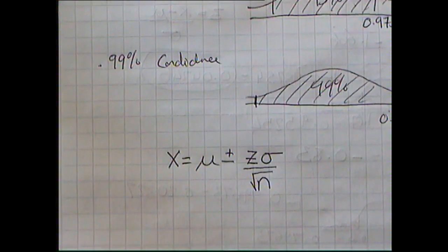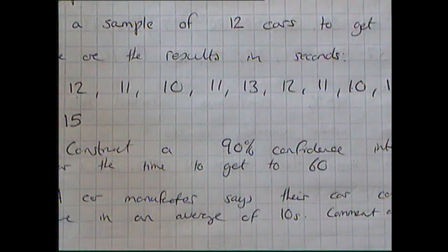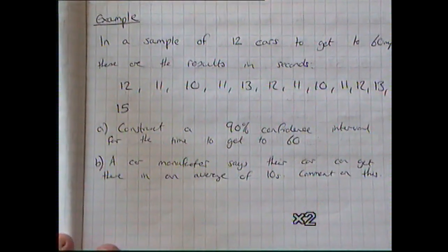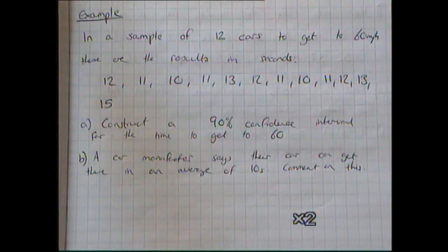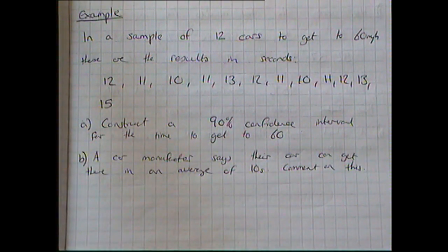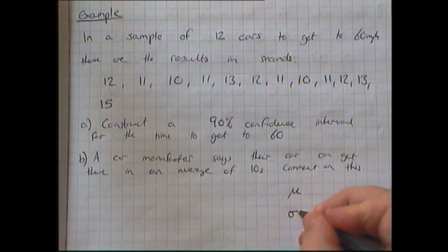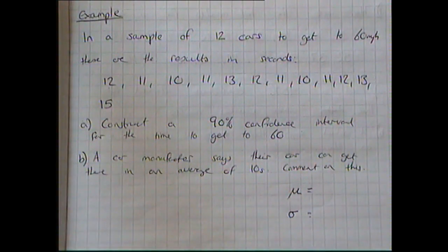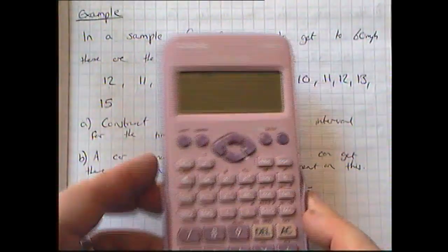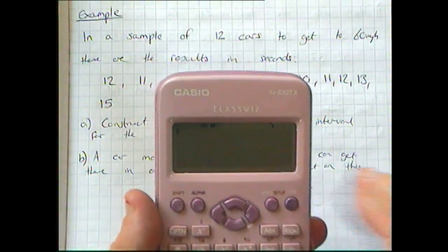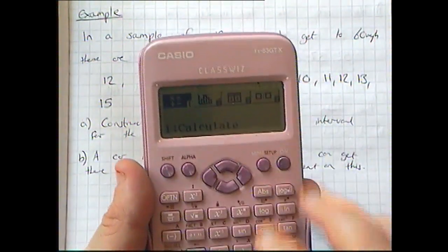Let's have a look at an example question — there are also four questions for you to have a go at. In a sample of 12 cars accelerating to 60 miles per hour, here are the results in seconds. We need to construct a 90% confidence interval of the time it takes to get to 60. My first step is to work out the mean and standard deviation using my calculator.